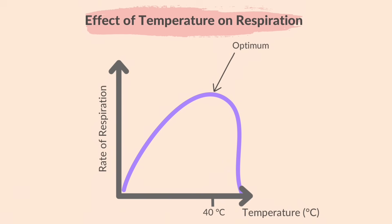As the temperature increases up to 40 degrees Celsius, the rate of respiration increases, so the time taken for the solution to become colourless reduces. The rate increases as the number of collisions between enzymes and substrates increases. Beyond 40 degrees Celsius, the rate of respiration decreases and the time taken for the solution to become colourless increases, since enzymes start to denature. Therefore, as temperature increases, the rate of respiration also increases until a certain point, after which the rate will decrease.